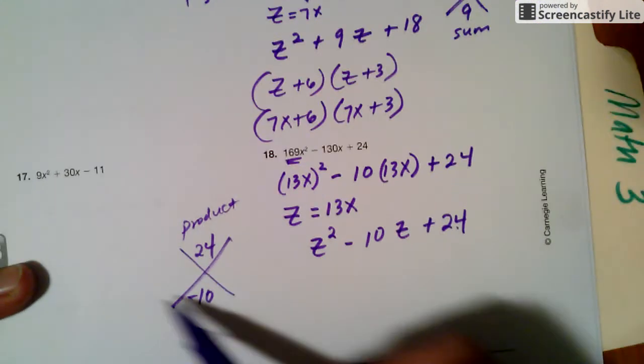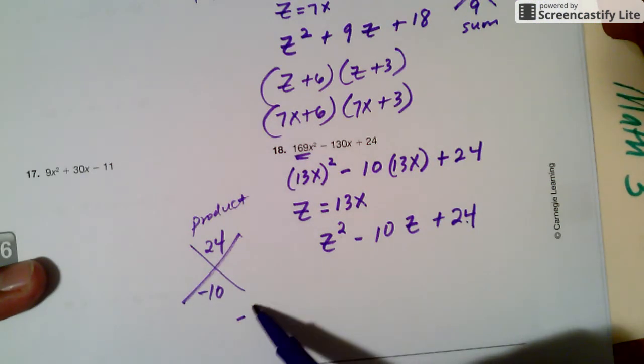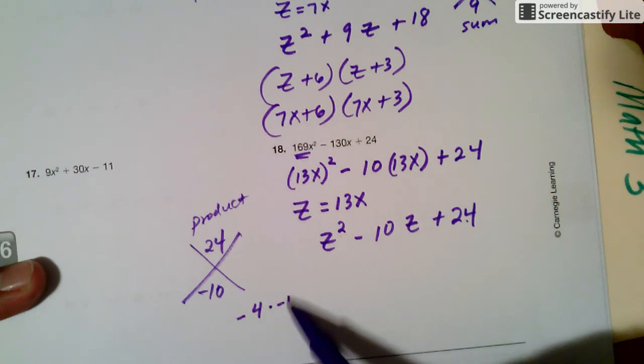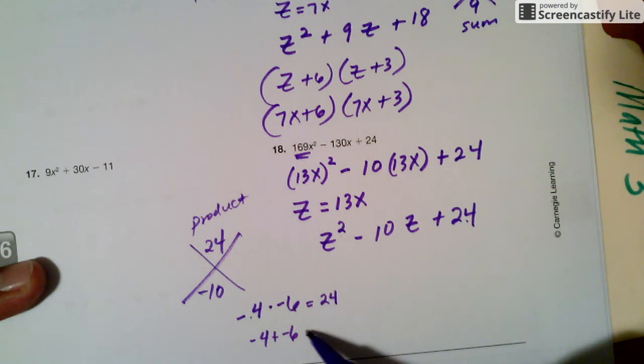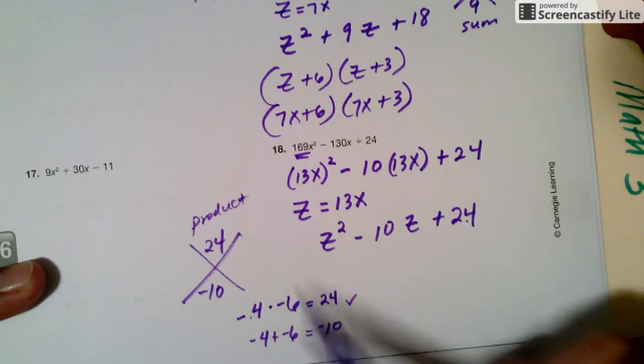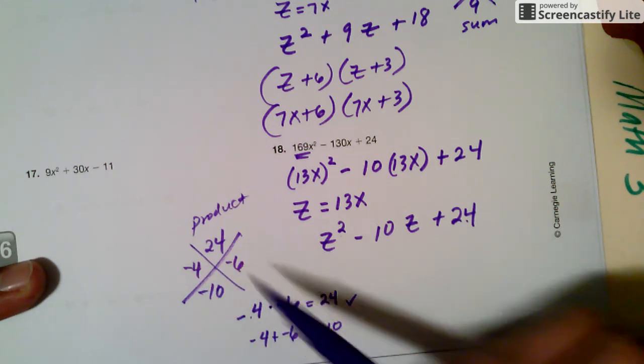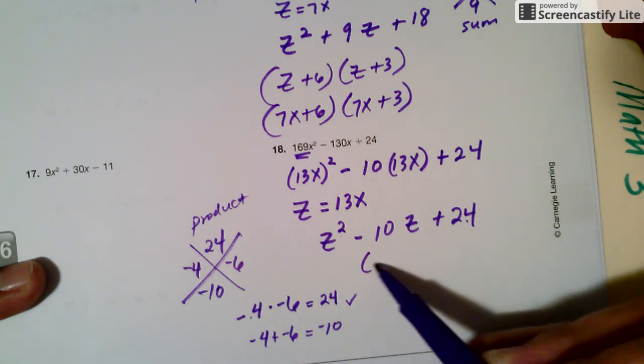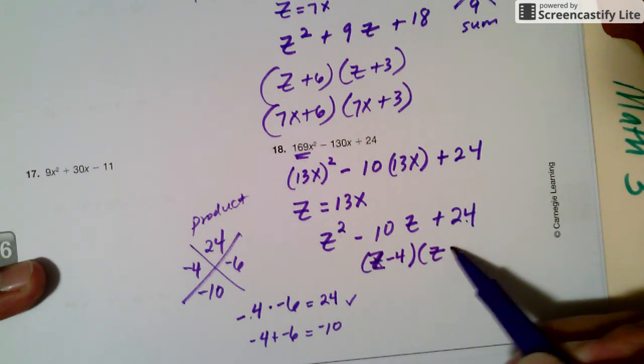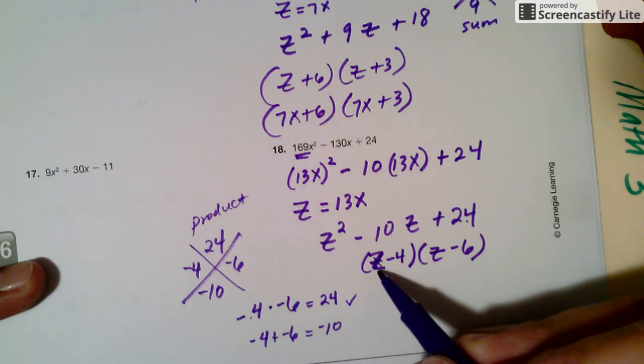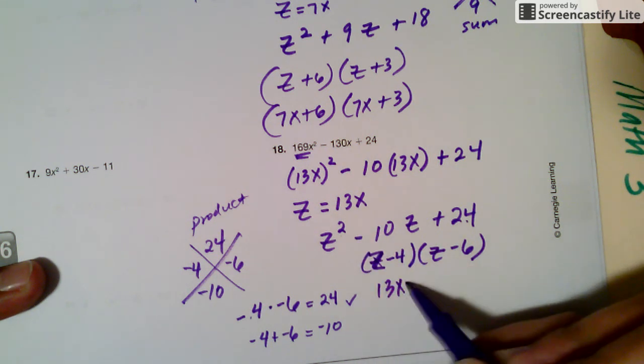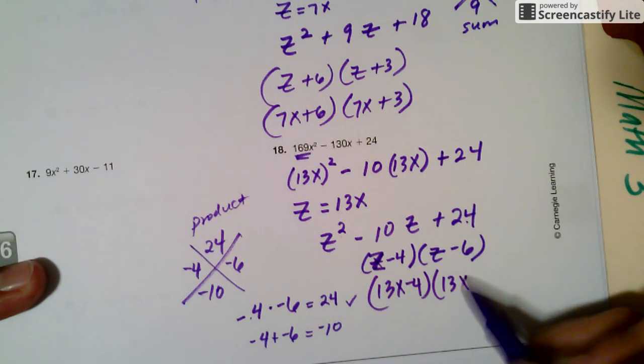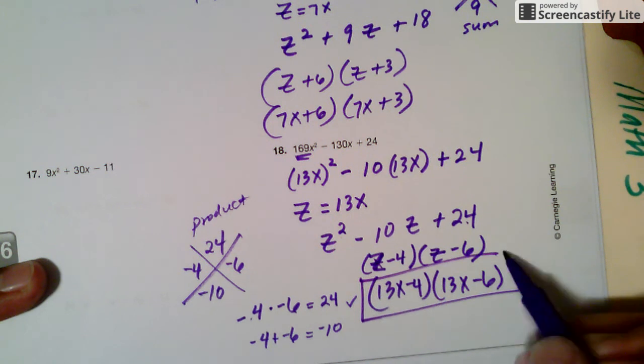And then I can start checking. Let's try negative 4 and negative 6. Negative 4 times negative 6 is positive 24. Negative 4 plus negative 6 is negative 10. That checks out. So the two numbers I want are negative 4 and negative 6. So this piece factors out to be z minus 4, z minus 6. And then I want to change the z back to x. And the z is 13x. So I'm going to do 13x minus 4, 13x minus 6. And that is my factor form.